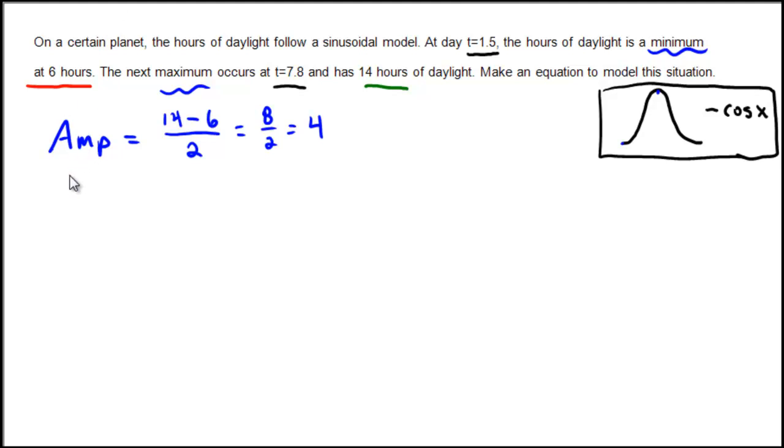The period is going to be from 1.5 to 7.8. So 7.8 minus 1.5 gives us the time from minimum to maximum, and then we multiply by 2 to get the entire period. So 7.8 minus 1.5 is 6.3 multiplied by 2 equals 12.6. That's our period.